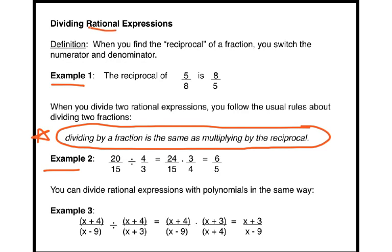For example, if I want to take 20 fifteenths and divide it by 4 thirds, I'm actually going to multiply by 3 fourths. And then you multiply straight across or cross-simplify and get your answer.